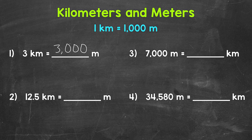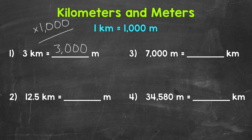So when we convert from kilometers to meters, we multiply by 1,000. Let's move on to number 2, where we have 12.5 kilometers equals how many meters. This number is not as easy to work with as the 3 kilometers in number 1.